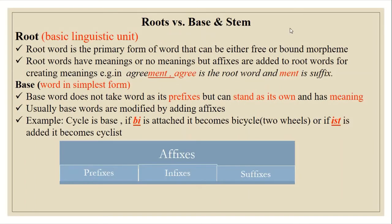Word formation is a core concept in morphology. Words are formed by roots and the base form of the word. A root is the basic linguistic unit — the primary form of a word that can be either a free or bound morpheme. Root words have meaning, but sometimes affixes are added to root words to create meaning. For example, in 'agreement,' 'agree' is the root word and '-ment' is the suffix. 'Agree' is a free morpheme, while '-ment' is a bound morpheme because it has no meaning when not attached to a word.